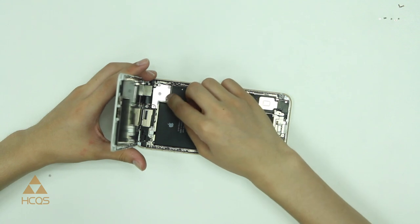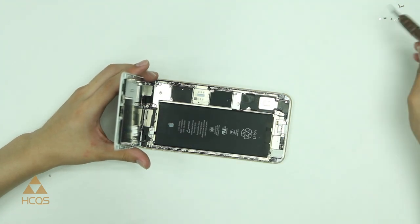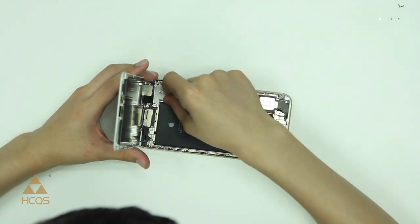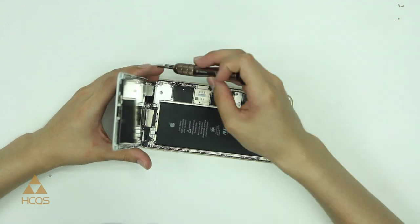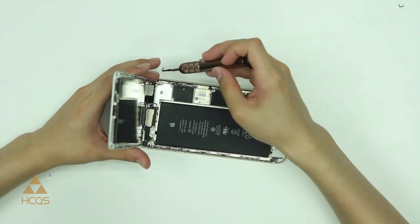Remember, we've got five screws and they do go into specific positions so you want to make sure that these are not mixed up. If you put the longest screw into the shortest hole, it will damage your phone.